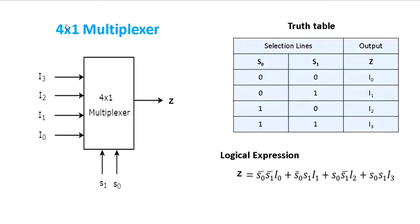For a 4-to-1 multiplexer, there are 4 inputs: i0, i1, i2, i3, and one output. Since there are 4 inputs, there are 2 selection lines. This is the truth table for the 4-to-1 multiplexer.